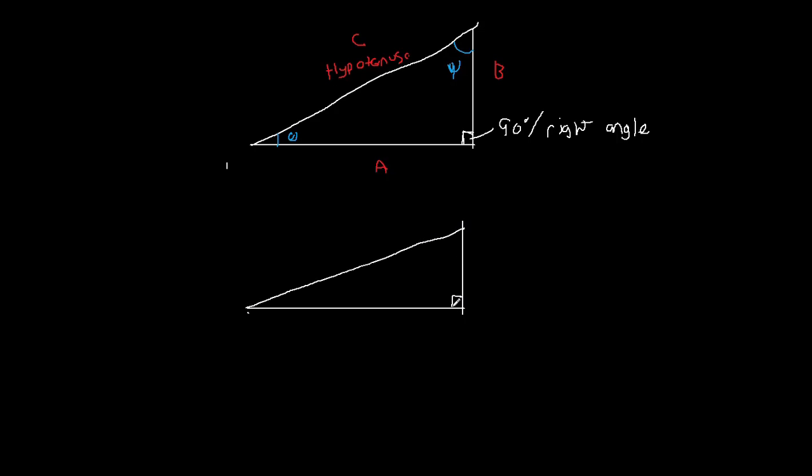So let's go ahead and redraw our triangle. And let's make that 90 degrees. Again, we're going to call this one A, B, and C. What I want to do is I want to talk about this angle in particular, which we're going to call theta again.